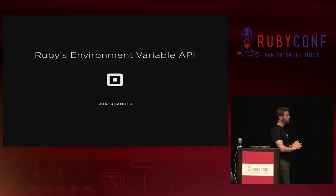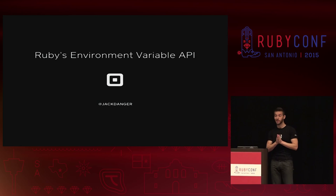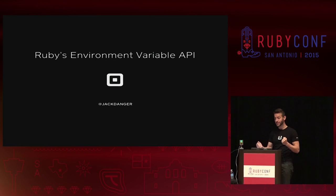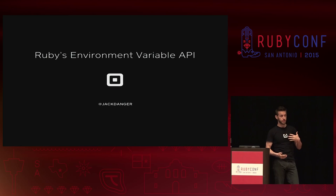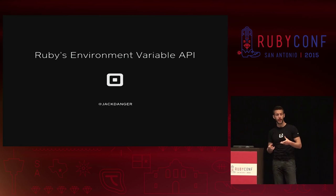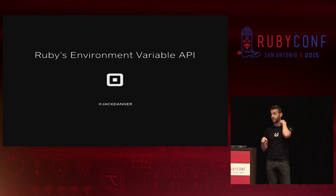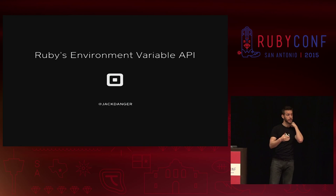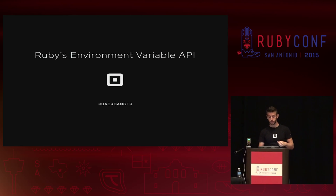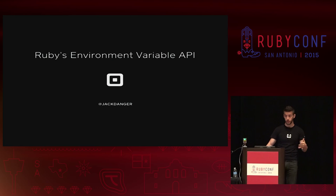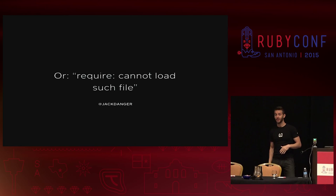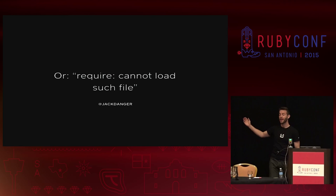This talk is about the Ruby environment variable API. Avdi encouraged me to keep that name, and I actually kind of like it. We're going to talk about things you can do with environment variables to tell Ruby how to behave — this is the core of how tools like Bundler, RVM, rbenv, and TruffleRuby actually work. We'll also talk about how to debug your machine when they go wrong. Another name for this talk could be 'require cannot load such file,' because when you get that error, something in the chain I'm about to show you has been misconfigured.